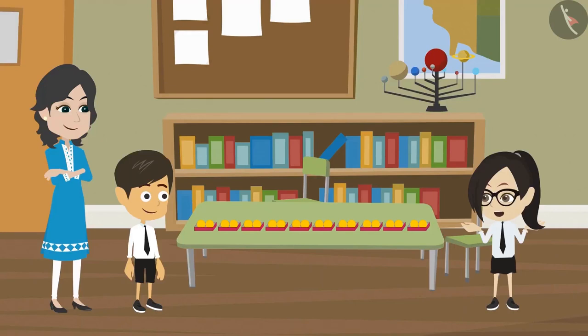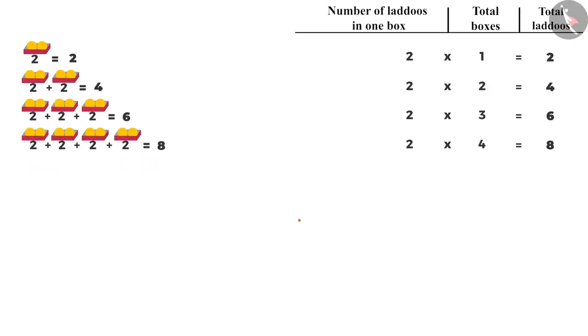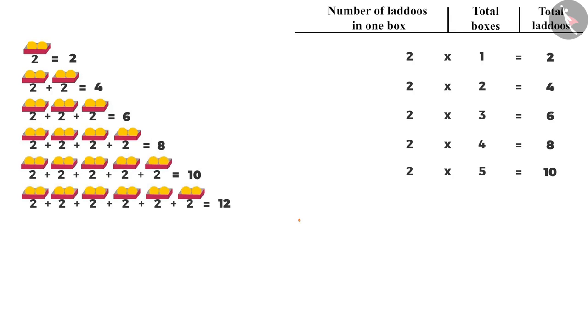That means we don't need to add them. No. For five to ten, you should try to find the result yourself and check. Then to find the laddus in five boxes, we will multiply two by five. Here, number of laddus is two and number of boxes is five. Then we can find that there will be ten laddus in five boxes. Number of laddus in six boxes will be two multiplied by six, that is twelve.